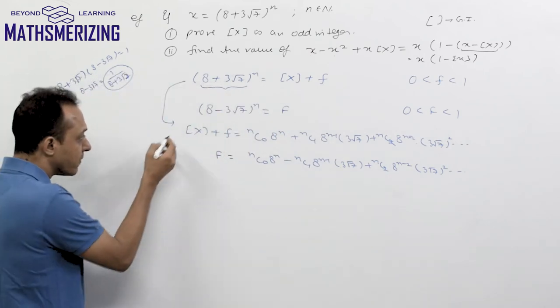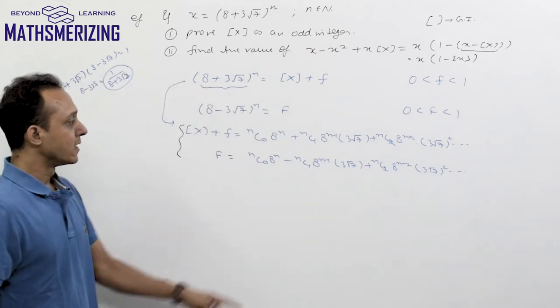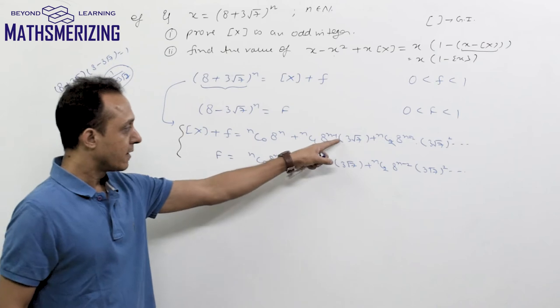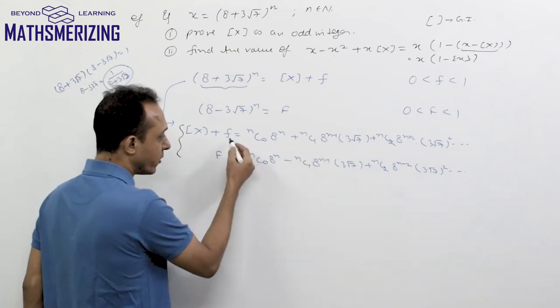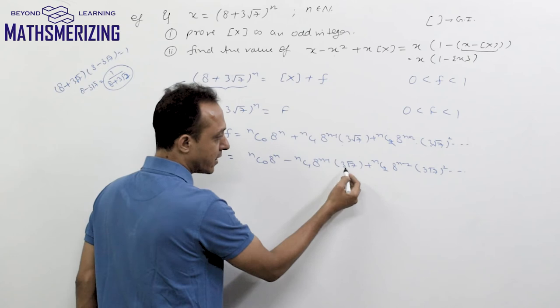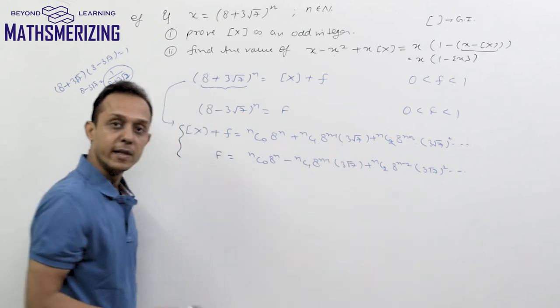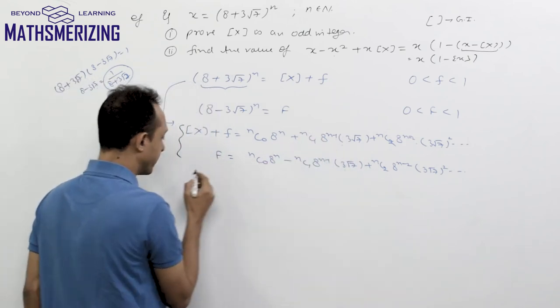From these two series, we need to cancel out the terms containing square roots. If we add the two series together, all the terms containing √7 get cancelled out. So we add them up.